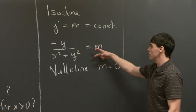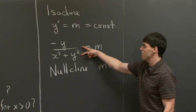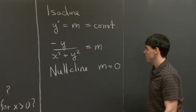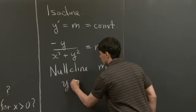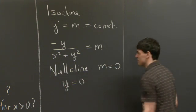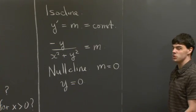So what's the nullcline for this ODE? Well, when m is equal to 0, the only way that y prime can be 0 is when y is 0. OK, so the nullcline for this ODE is y equals 0.